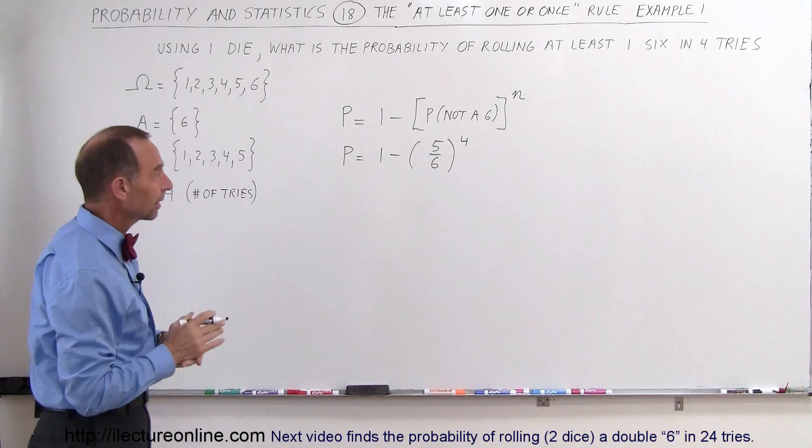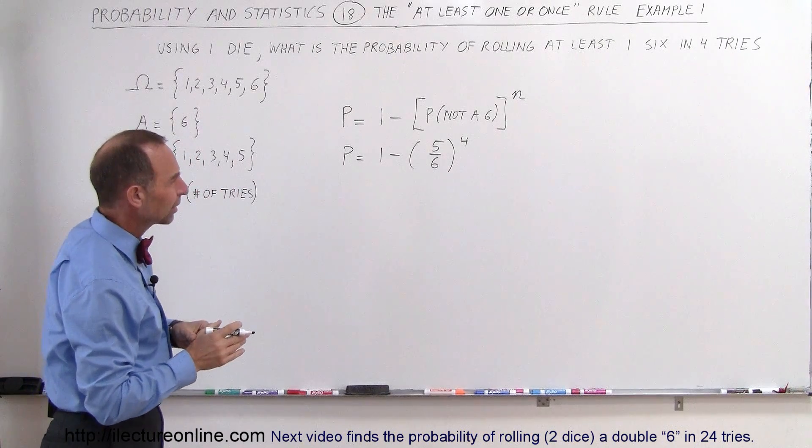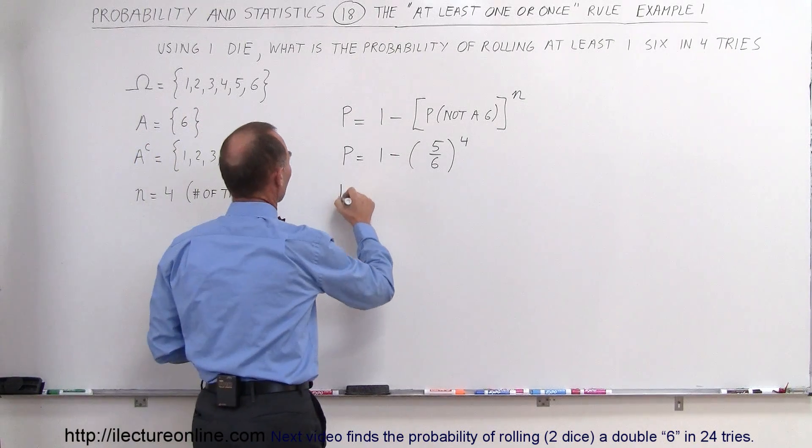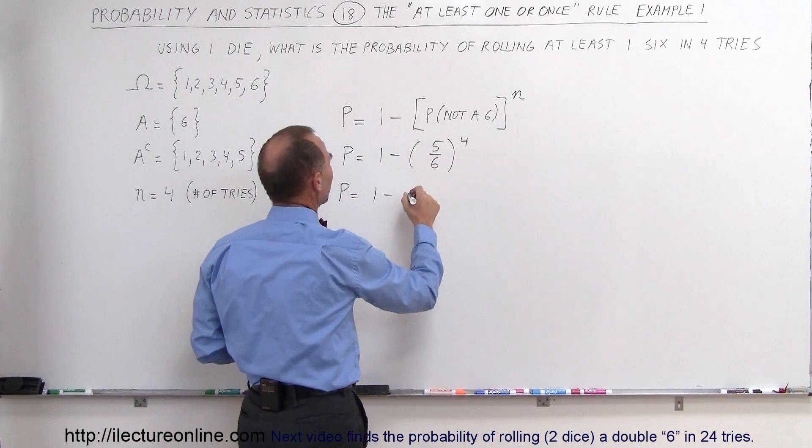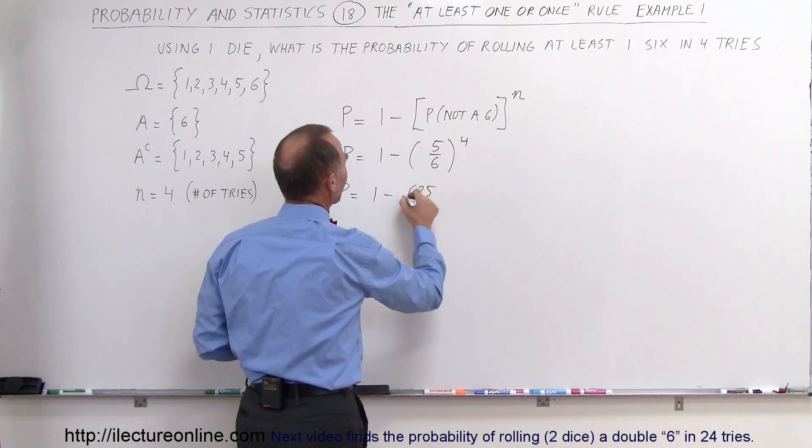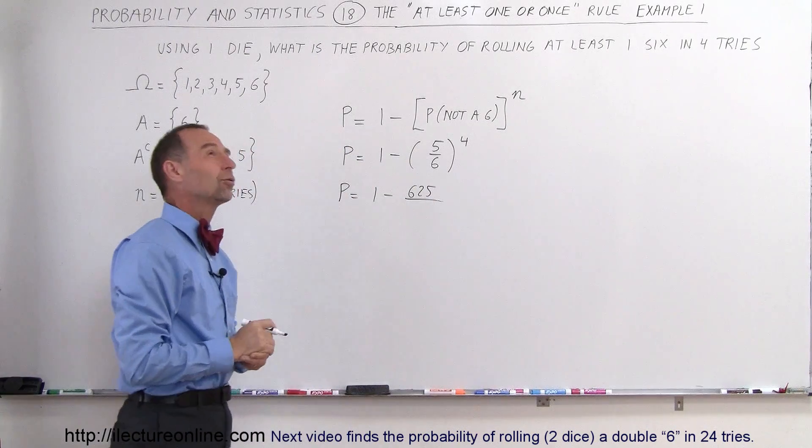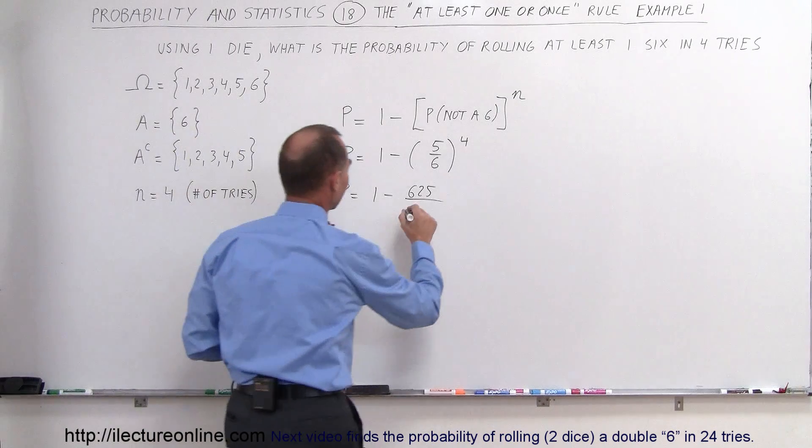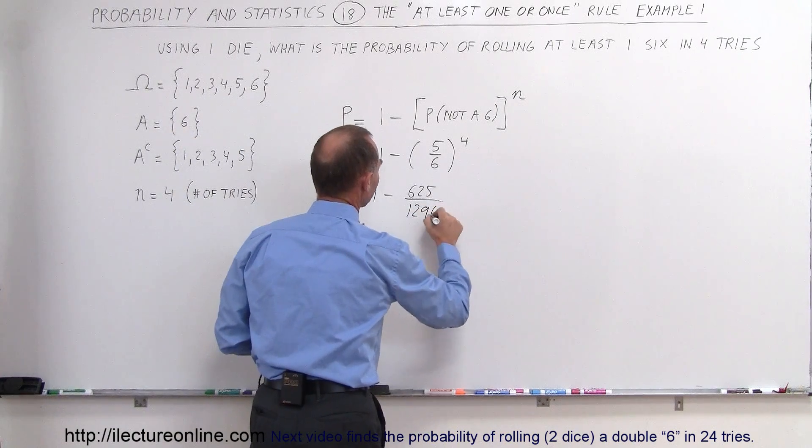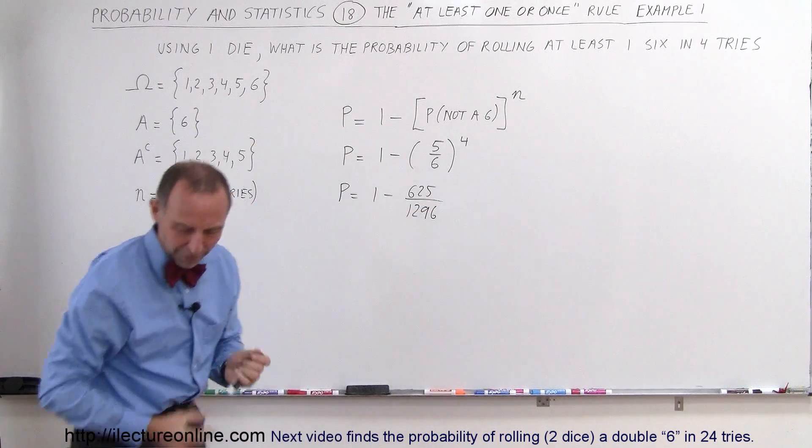Here you might want a calculator, or you may want to try to do it without one. The probability equals one minus five to the fourth power, which is 625, over six to the fourth power—that's 1296. I'll probably verify that with my calculator.